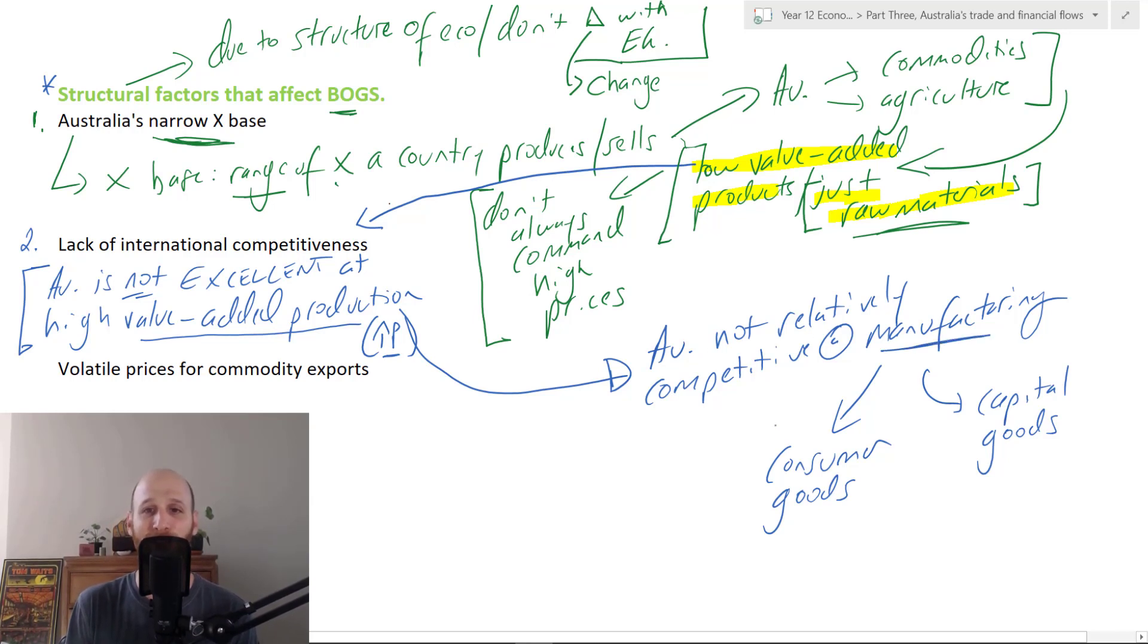To elaborate on this point: Australia is not relatively competitive at high value manufacturing. Australia isn't very good at manufacturing consumer goods or capital goods. Once upon a time we weren't too bad, but in recent years China has totally dominated us and we no longer do these things. So Australia is not producing those high value, high price manufactured exports. If we combine these two points together - narrow export base, lack of international competitiveness - we can start to think about this point.